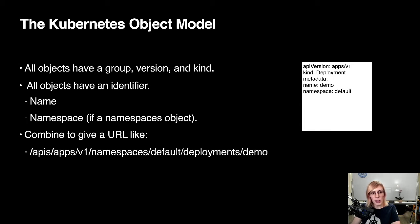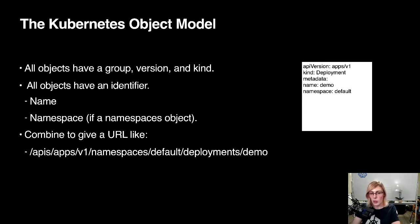Every single object also has an identifier. We can tell one deployment from another because it has a unique name-namespace pair. Every resource has a name, and any resource in a namespace has a namespace. Most things exist in a namespace — pods, deployments, etc. Some things like nodes or cluster role bindings don't exist in a namespace and have no namespace field.